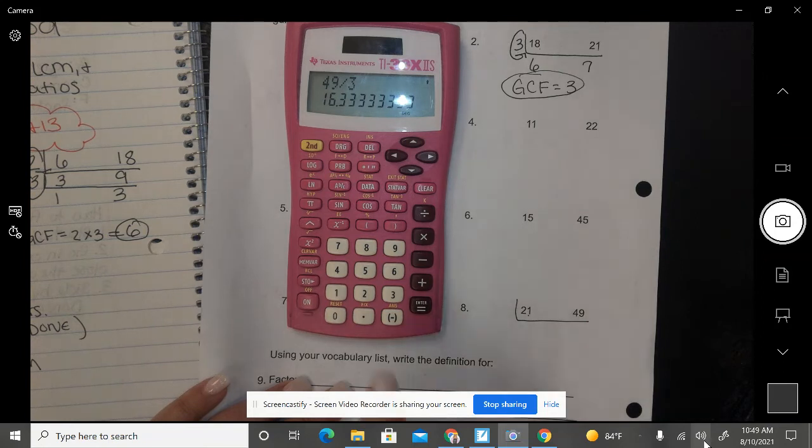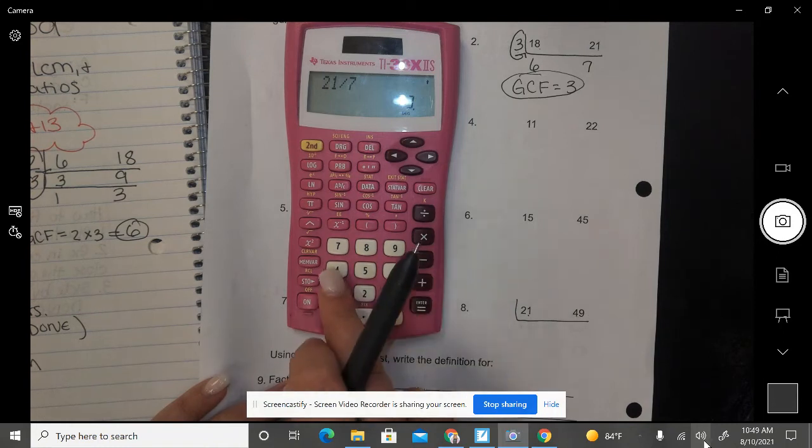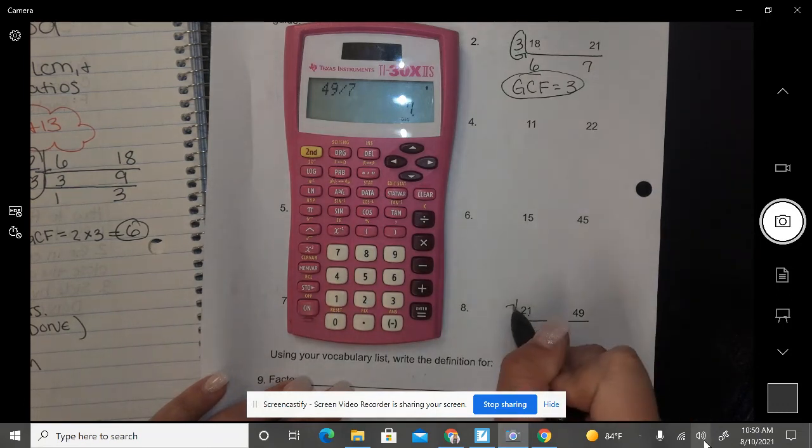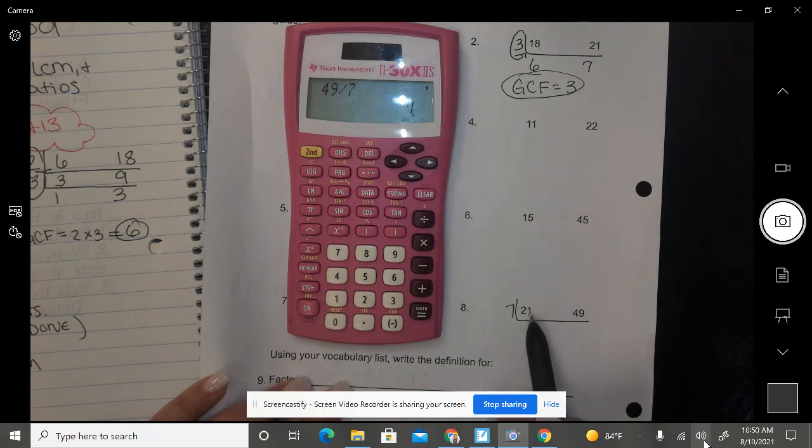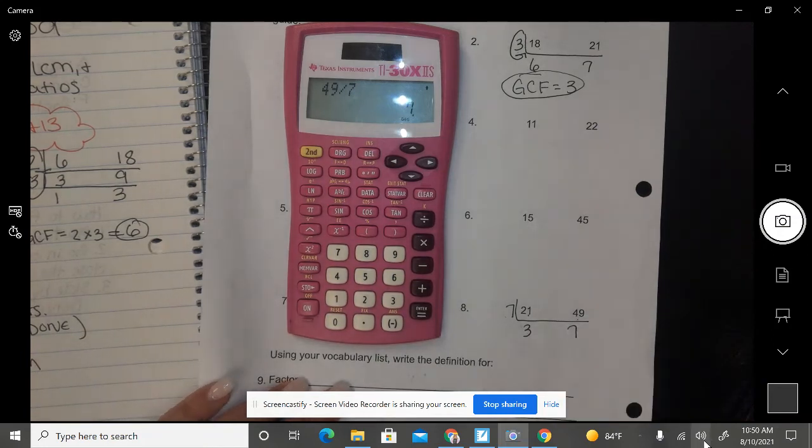So then I can try 7. 21 divided by 7 gives me 3. Then I can try 49. 49 divided by 7 will give me 7. So we know 7 can work. So I'm going to put 7 out on the side and go to step 3 and divide. 21 divided by 7 is 3. 49 divided by 7 is 7.